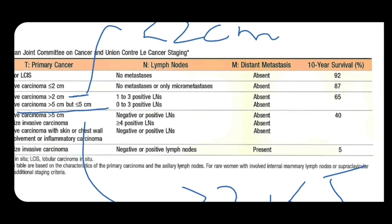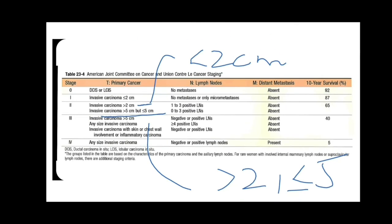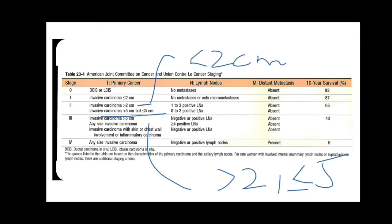The 10-year survival rates are: stage 0 — 92%, stage 1 — 87%, stage 2 — 65%, stage 3 — 40%, and stage 4 — 5%.